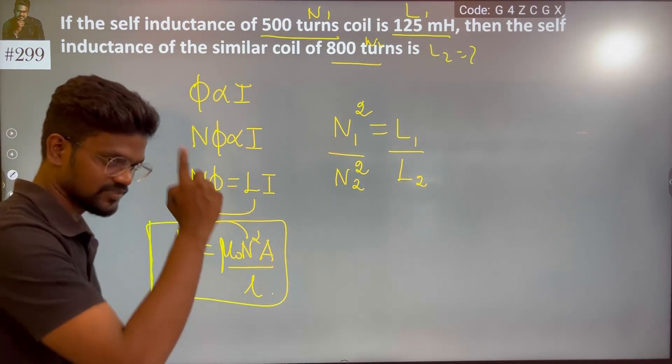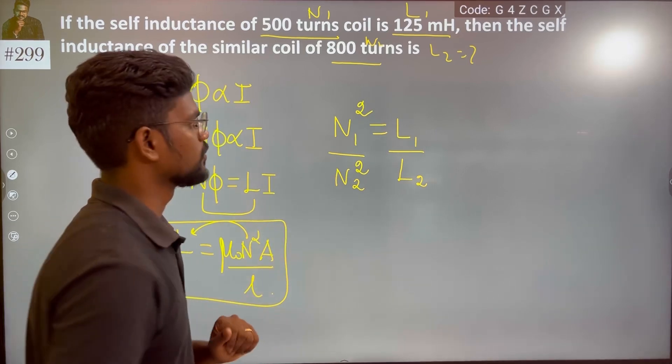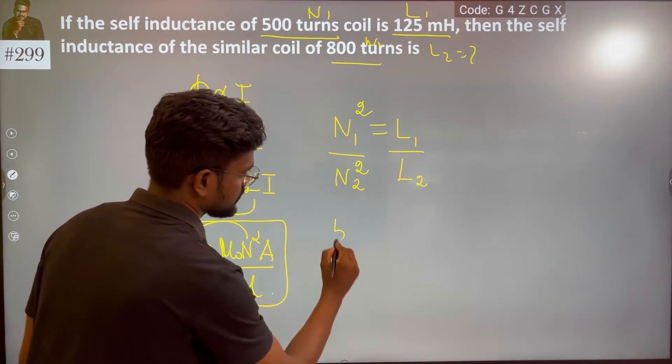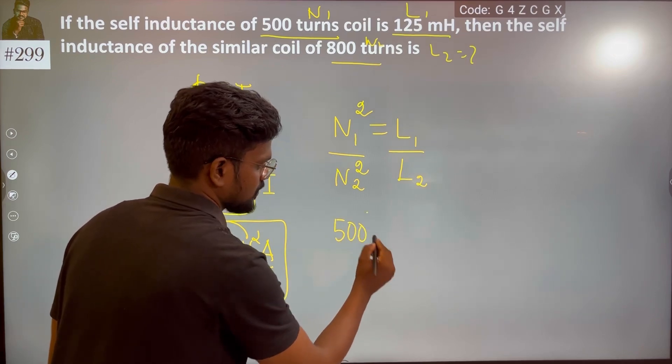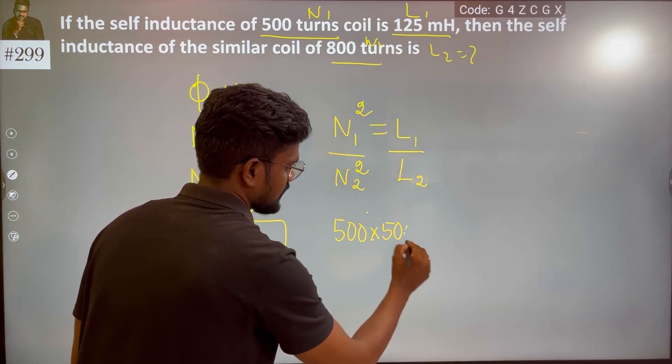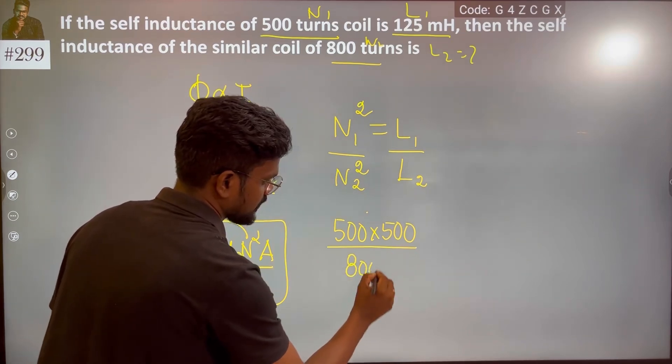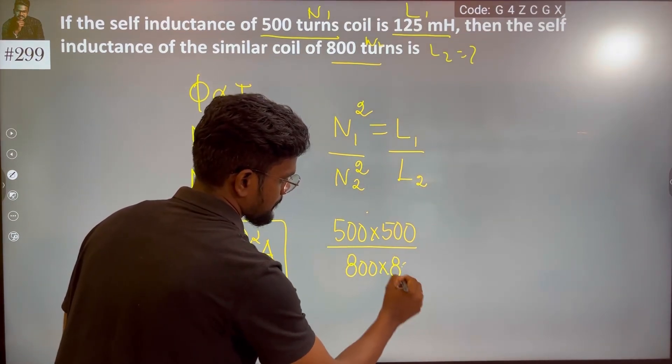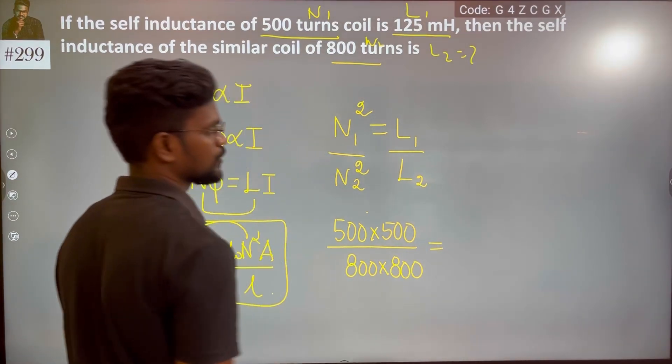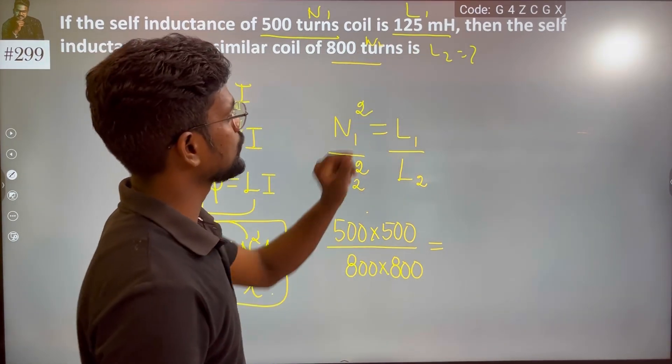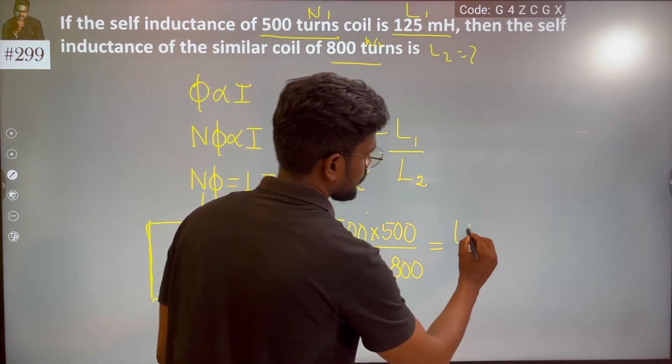This is the formula we use in self-inductance. L over n1 is 500 square, into 500, n2 is 800, which is 800 into 800, equals L1 which is 125, and then L2.